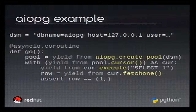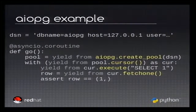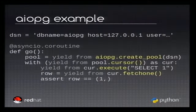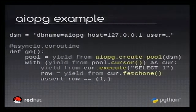From the pool, you create a cursor. A cursor is a standard method of the DB API. You use execute to run your query, and fetchone is used in this example to fetch one row. At the end, you get your result — number one. Since everything is asynchronous, you have to put yield from in front of each method call. But if you ignore the yield from, the code basically looks like a blocking call.